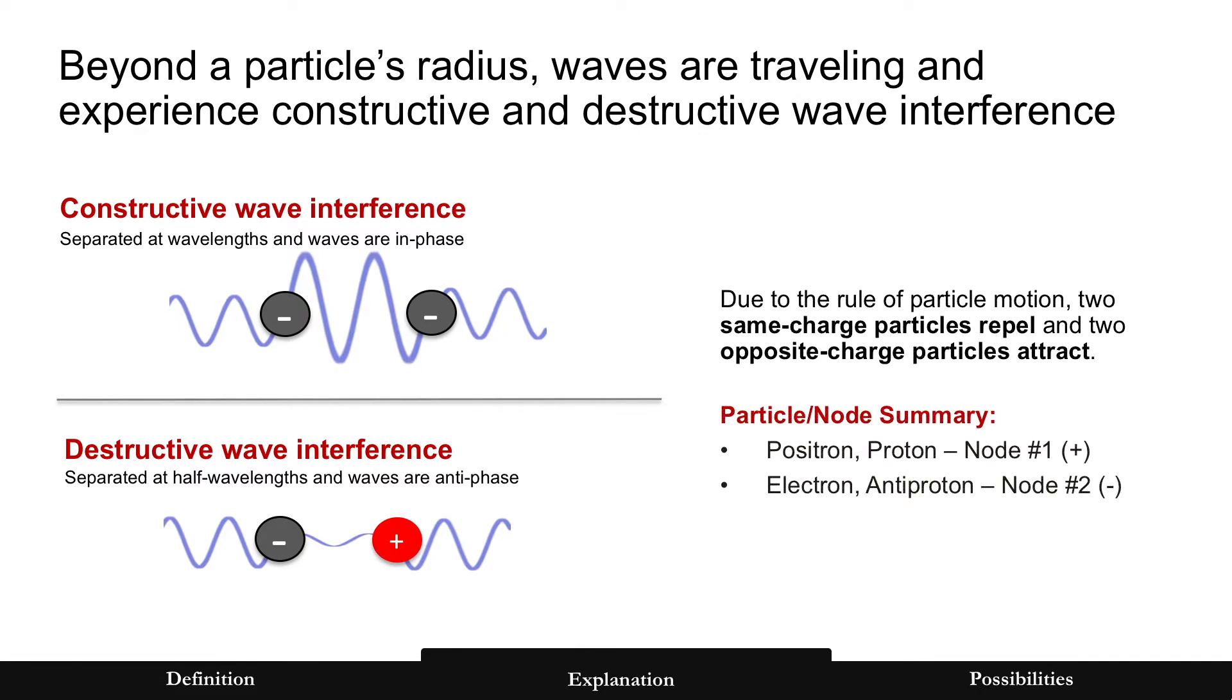One will repel, the top one will, if it's constructive. And that'd be two electrons, for example, or two positrons. But if they are opposite charge and they're spaced a half wavelength, it is destructive wave interference. That minimizes amplitude, and the rule of motion is for particles to minimize their amplitude. Thus they are attracted.